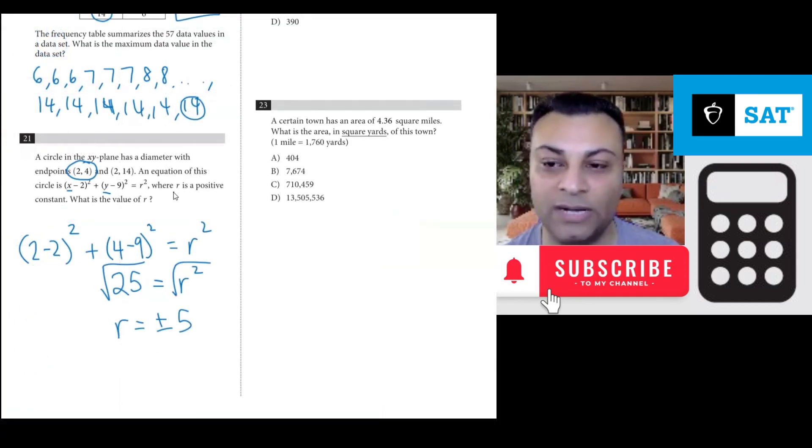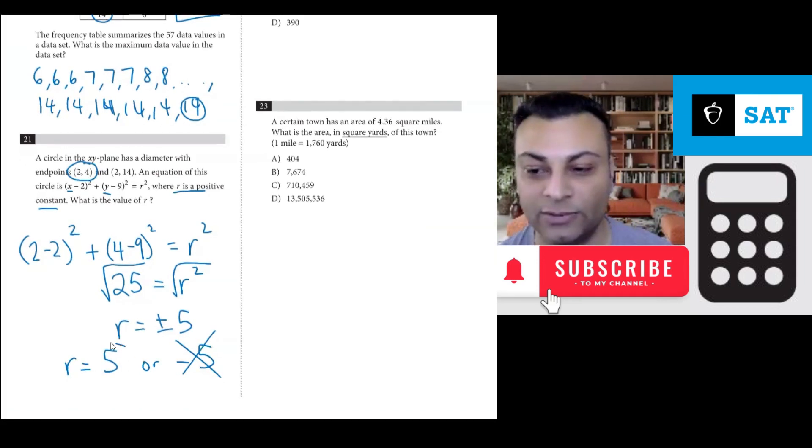However, this r is a positive number, so we will not be using -5. What I want to do is show it this way: r = 5 or r = -5, and then we reject -5. So the answer is 5. That's what you would put in.